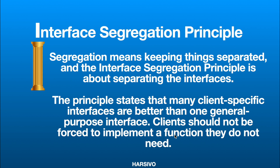Interface Segregation says that instead of writing one single interface with a lot of functionalities and asking all your classes to implement all those functionalities even though a class does not require them — that is not correct. What you should do is create specific interfaces, create many interfaces, and then let your class inherit the specific interface which is needed for that class.